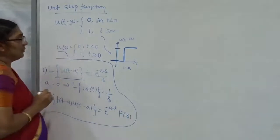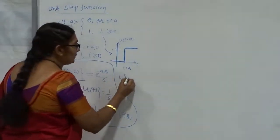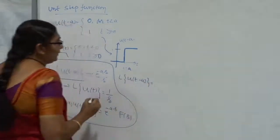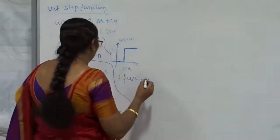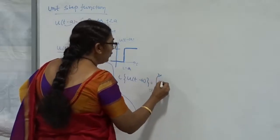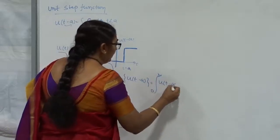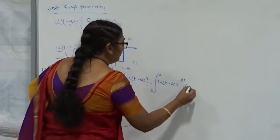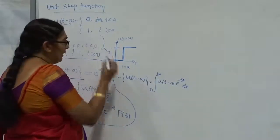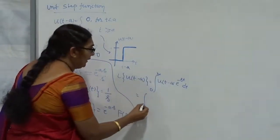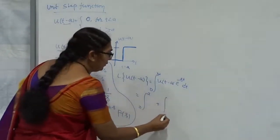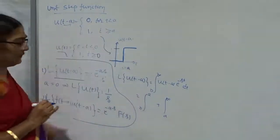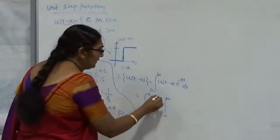How do we get this? You know what U of T minus A is. Now, take the Laplace transform of U of T minus A. The limit is 0 to infinity of U(T minus A) into e to the power of minus ST, DT. I split the integral into 0 to A and A to infinity. From 0 to A, the function is 0, so that part is 0.